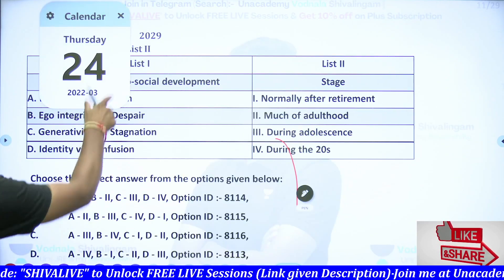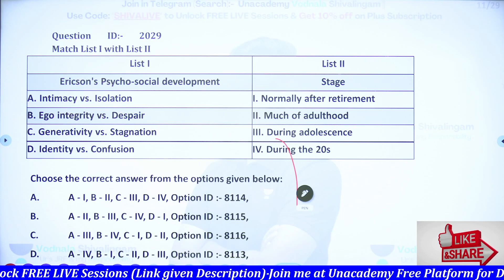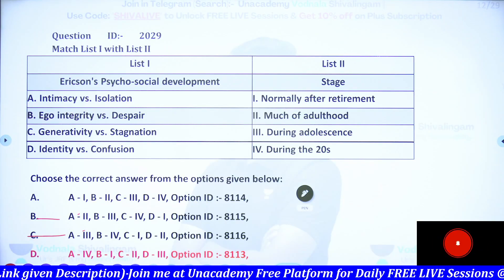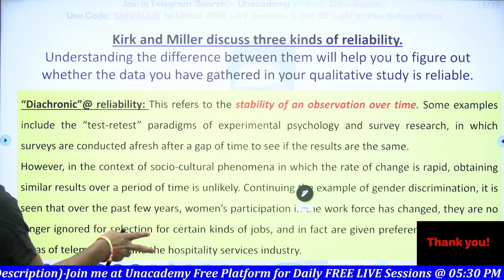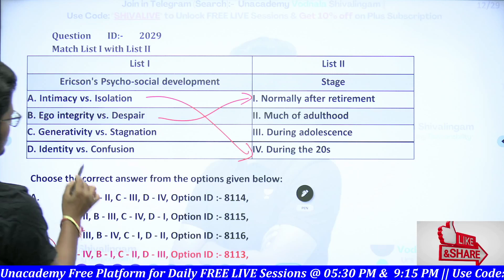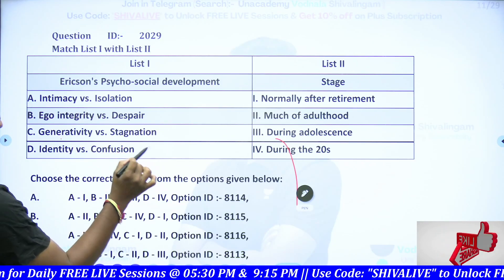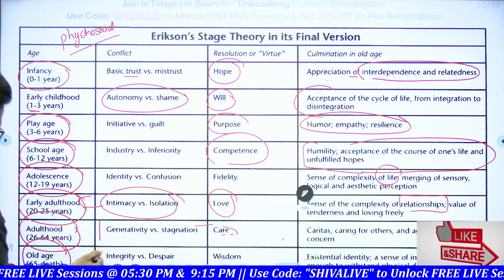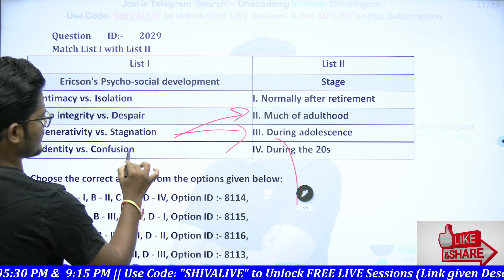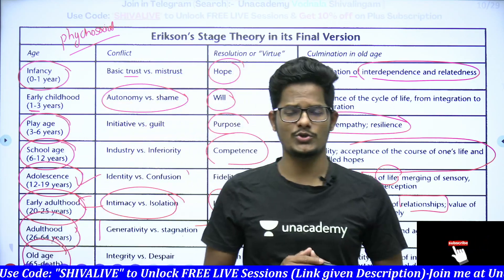Intimacy versus isolation — is it early childhood? During adolescence? Much of adulthood? Or during the twenties? The answer is: A is 4 — intimacy versus isolation occurs during the twenties — and B is 1 — ego integrity versus despair is normally after retirement. Integrity versus despair is the last stage, after retirement. Generativity versus stagnation is during much of adulthood — C is 2. And identity versus confusion is during adolescence — D is 3.